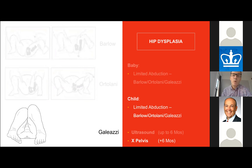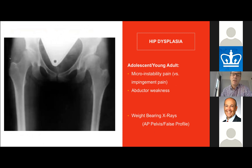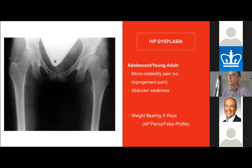Once the child is slightly older, the Barlow and Ortolani maneuvers will not be very efficient, leaving limited abduction and the Galeazzi sign as key findings. In older children, we switch from ultrasound over to pelvic x-rays. The adolescent will present with an entirely different spectrum — the primary complaint being instability pain or pain during daily activities like walking, distinct from the flexion-based groin pain seen with impingement.